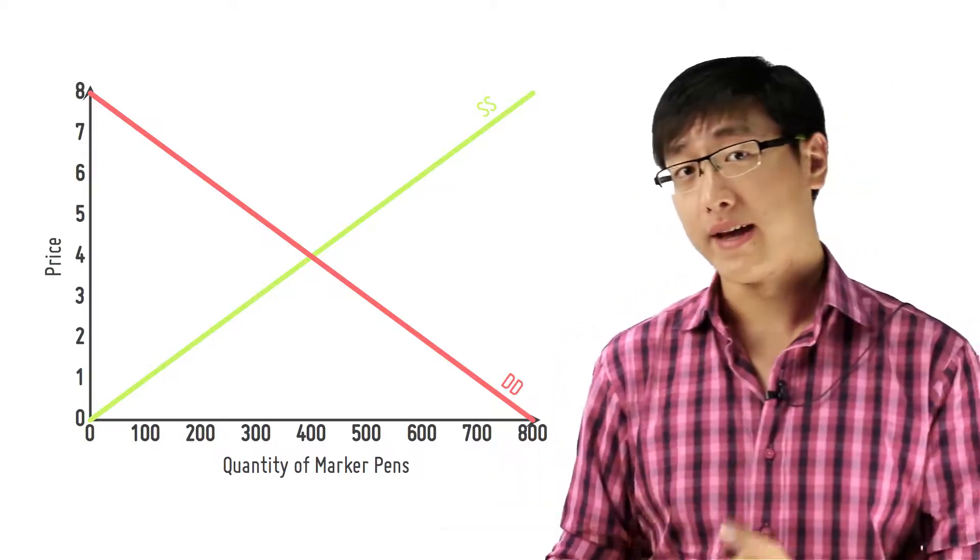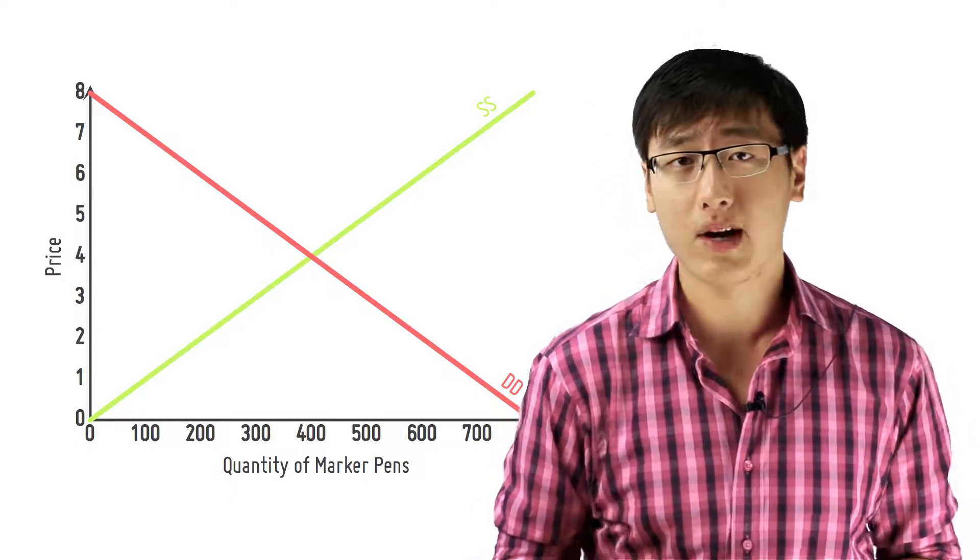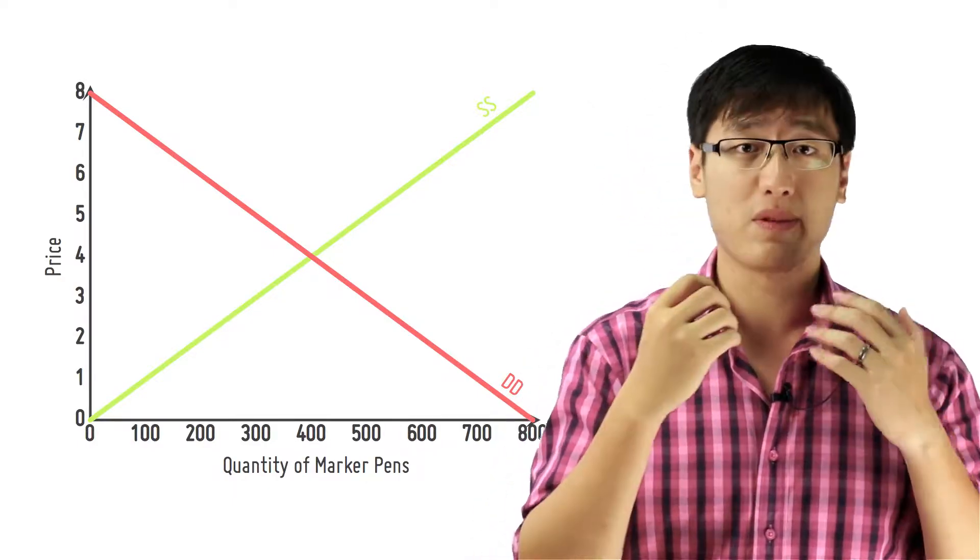So we've talked about demand and we've talked about supply. When we put these two curves on the same graph, what happens is that there's going to be an intersection.